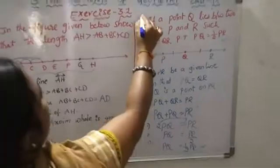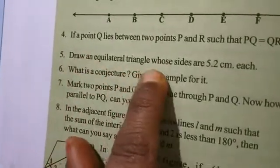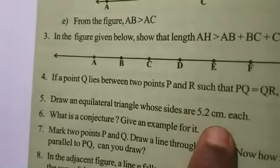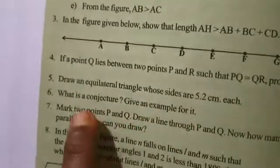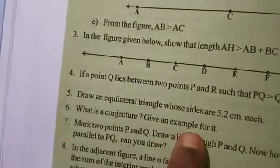This is also important for examination. Going to the next question — the fifth question: draw an equilateral triangle whose sides are 5.2 cm each. In last year's class, you learned how to draw triangles using a given side. So you can do it yourself. The sixth question about conjecture was also discussed in the previous class.